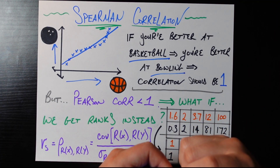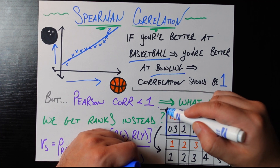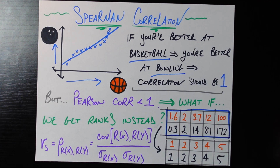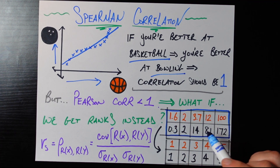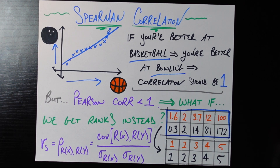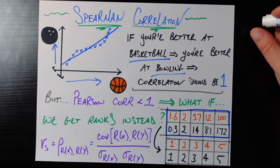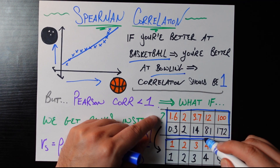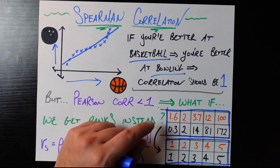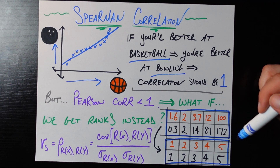The first step of Spearman correlation is to take all your data — assume this table represents five people, with the first row being their basketball scores ranked ascending, and the second row being their bowling scores. As we can see, if someone's basketball score is higher, their bowling score is also higher. The first step is to transform this table into a table of ranks — not the actual scores, but each person's rank relative to everybody else on that variable.